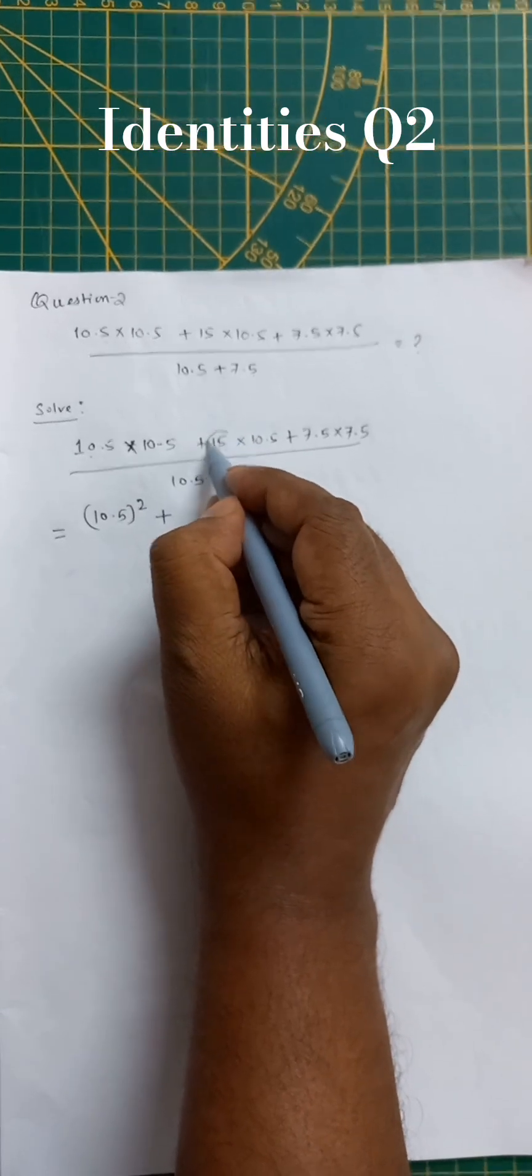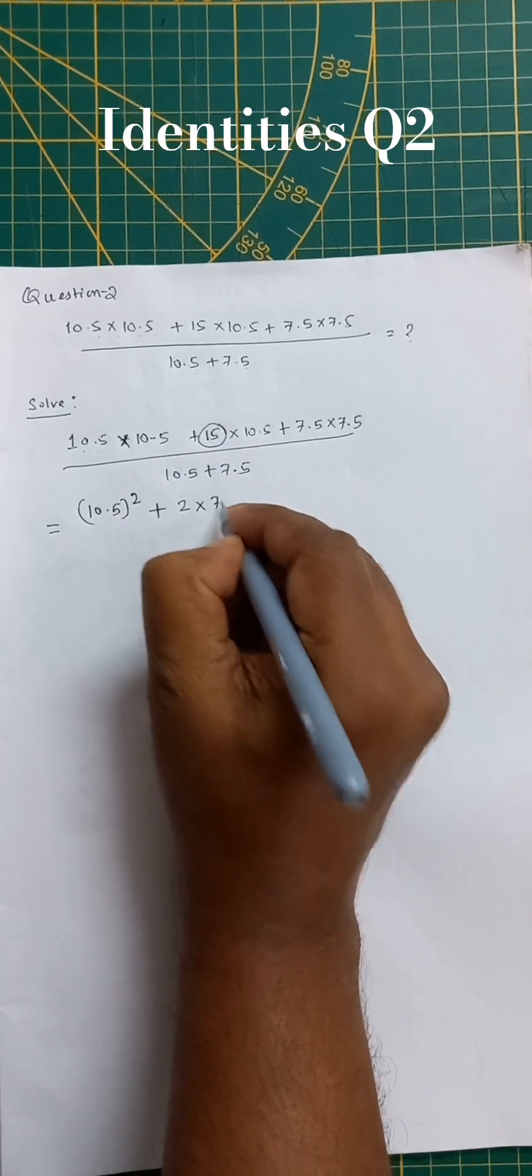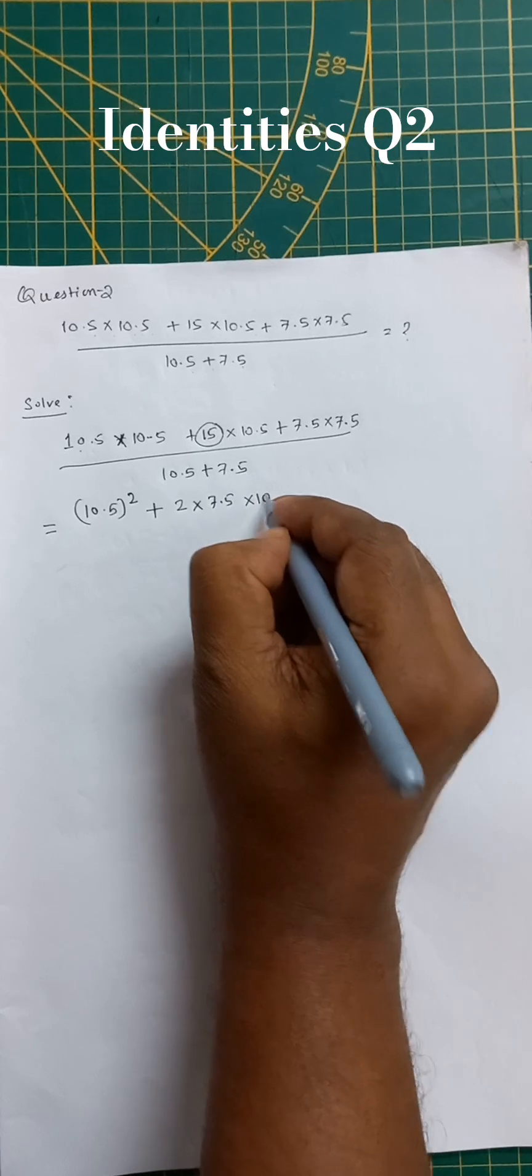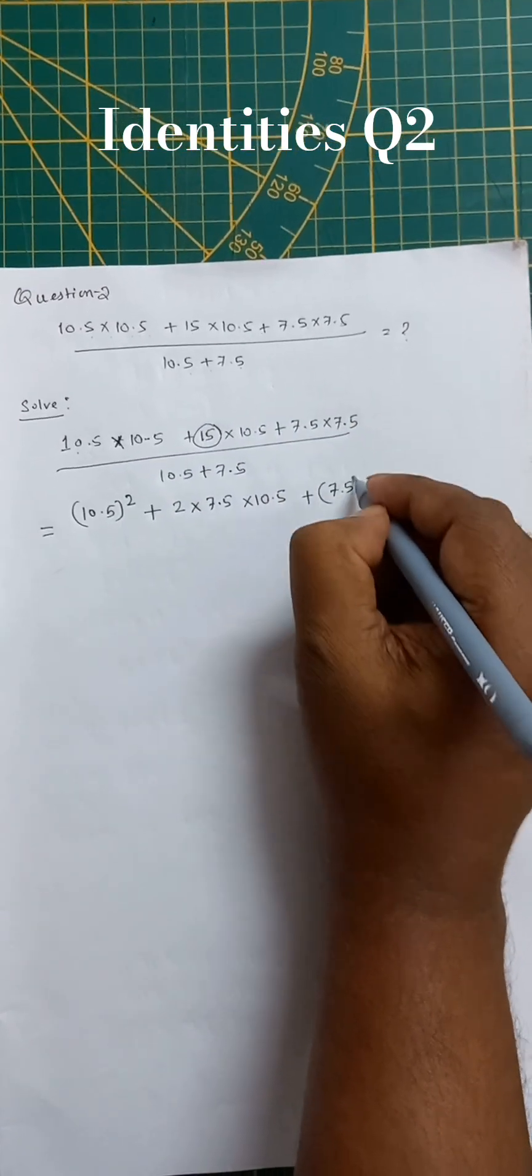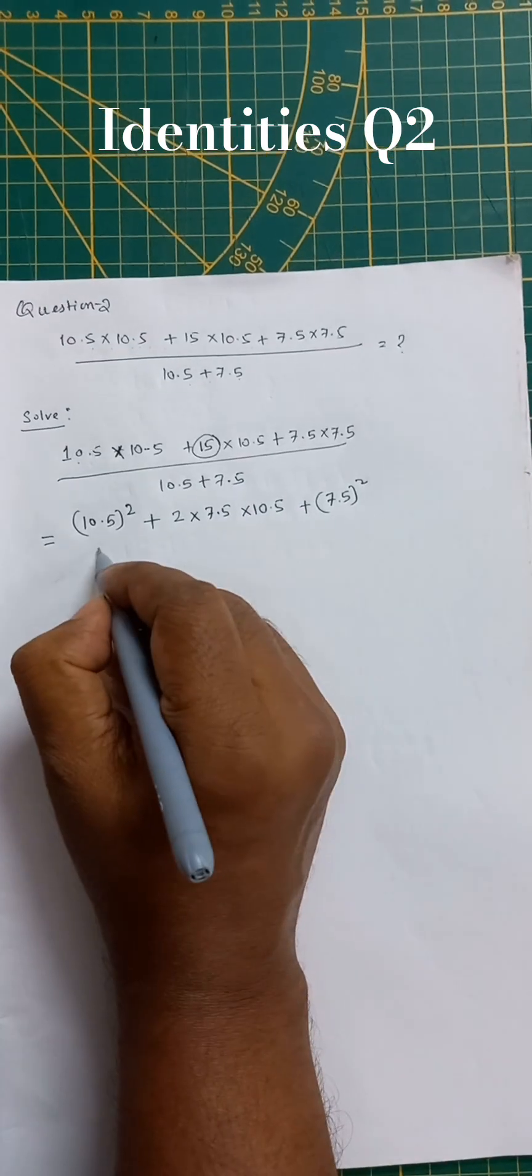We can simplify 15 into 2 into 7.5 into 10.5, plus 7.5 into 7.5 we can write as 7.5 whole square.